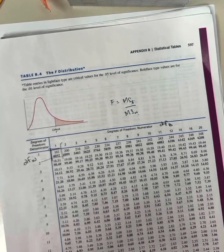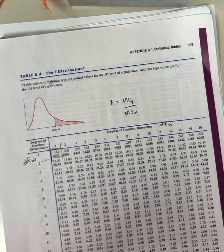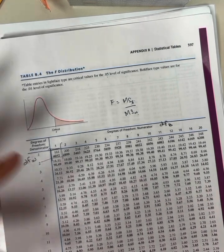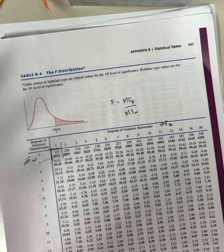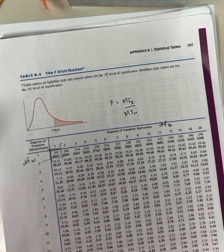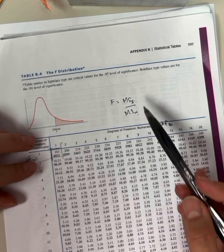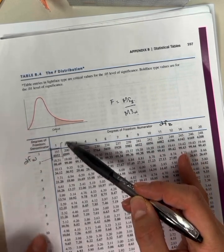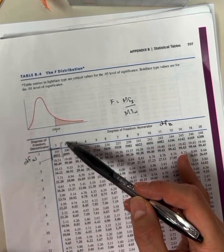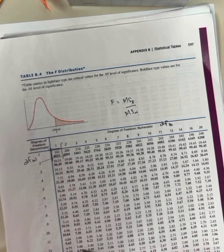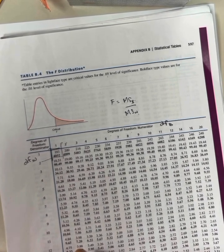You are welcome to write on your table what these values are. It's an open notes test. Offload some of the cognitive effort of figuring out what the table is telling you and how to use it. Degrees of freedom between was 2, degrees of freedom within was 12.